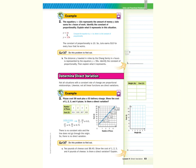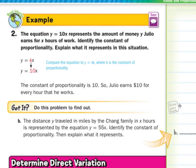In guided example 2, the equation y equals 10x represents the amount of money y Julio earns for x hours of work. Identify the constant of proportionality. Explain what it represents in this situation. Well, our direct variation equation is y equals kx, where k is the constant of variation or constant of proportionality. Well, if we're given the equation y equals 10x, that 10 is our constant of proportionality. What does it mean? Well, the equation represents the amount of money y that he earns for x hours. So he earns $10 for every hour that he works.